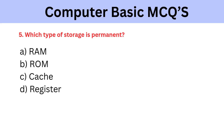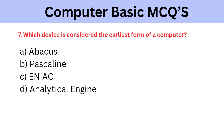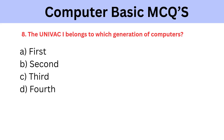Who is known as the father of the computer? A) Blaise Pascal, B) Alan Turing, C) John von Neumann, D) Charles Babbage. The correct answer is Charles Babbage. Which device is considered the earliest form of a computer? A) Abacus, B) Pascaline, C) ENIAC, D) Analytical Engine. The correct answer is Abacus.